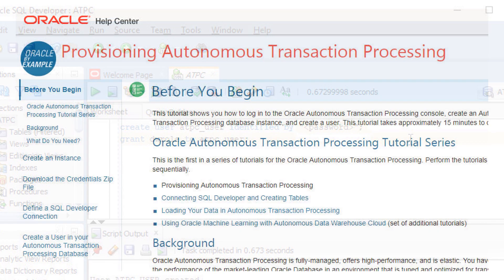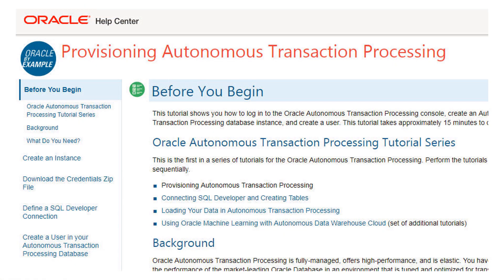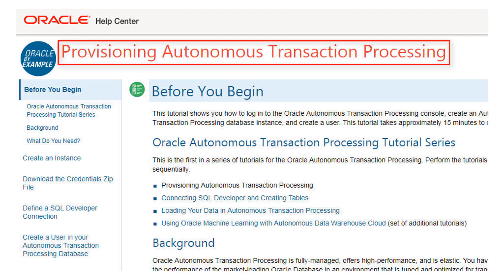For detailed steps on performing the example shown in this video, go to the Oracle Learning Library and open the tutorial named Provisioning Autonomous Transaction Processing.